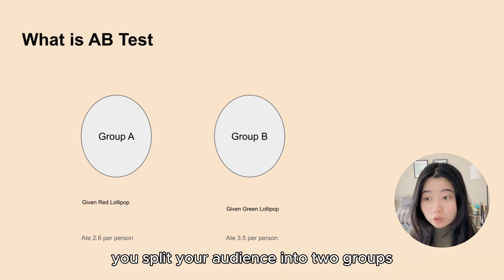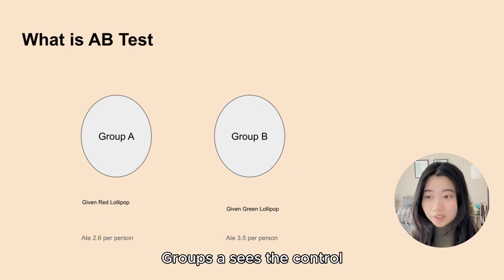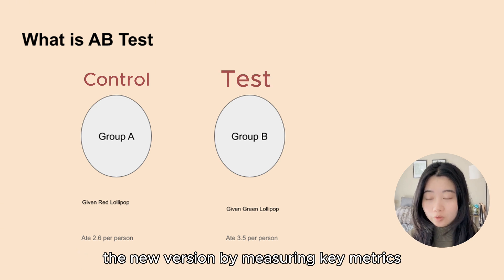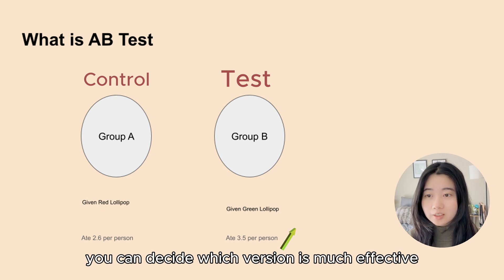You split your audience into two groups. Group A sees the control, and Group B sees the variant. By measuring key metrics, you can decide which version is more effective.